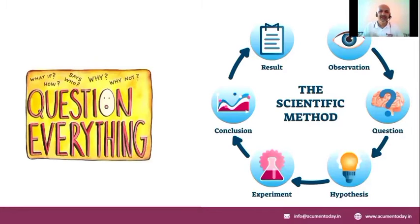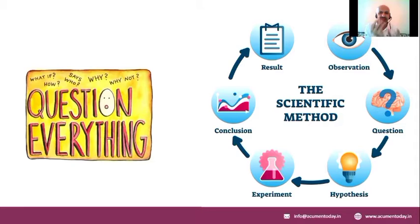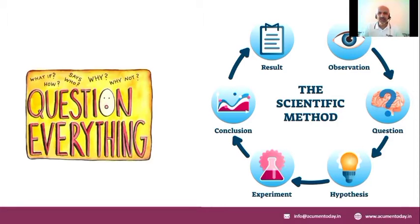A hypothesis may not be true, it may be false, it may be proven wrong — doesn't matter. On your hypothesis you do a lot of experimentation, and through the experimentation the result is your conclusion. You take the result out for debate and then you keep changing, so this cycle keeps repeating itself.